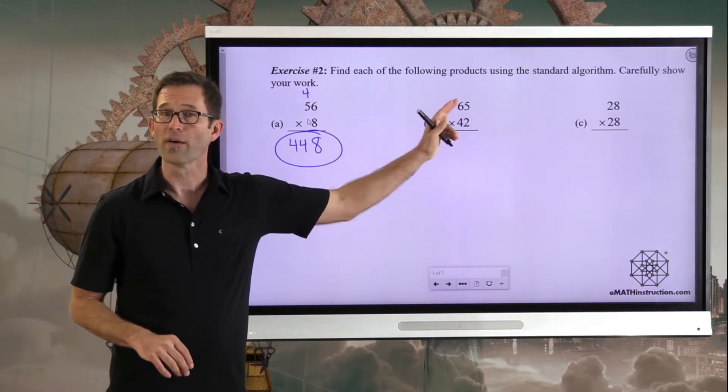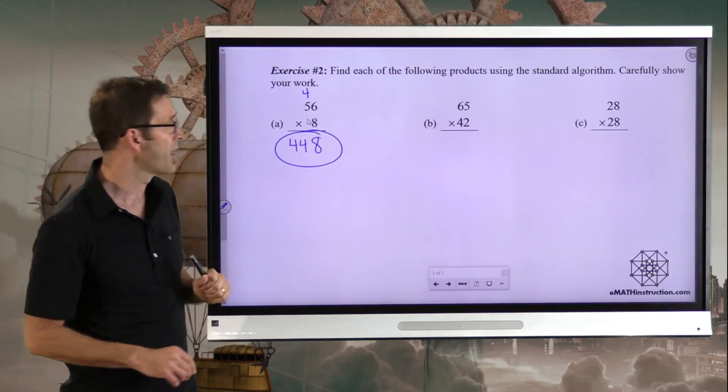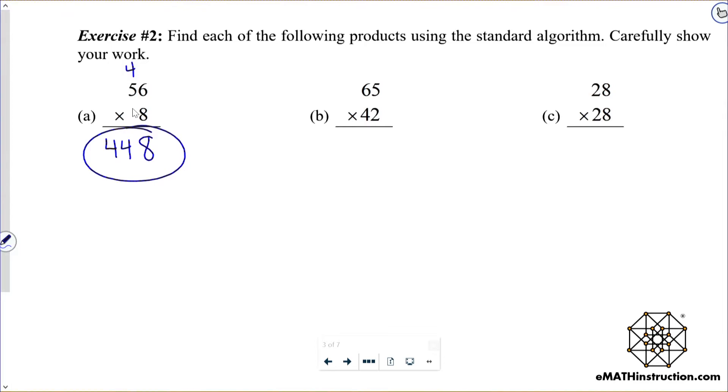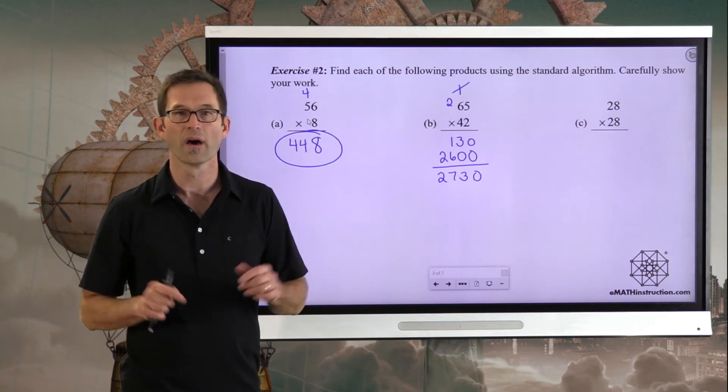In the second problem where we have 2-digit times 2-digit, that's where we're going to have to add more rows. First thing I'm going to do is multiply 65 by 2. 2 times 5 is 10, carry the 1. 2 times 6 is 12, then I add an extra 1 to get 13. I'm now going to add a 0 in. 4 times 5 is 20, I'll put that 0 down, carry the 2. 4 times 6 is 24, add another 2, and I get 26. Now I'm going to add those: 0, 3, 7, 2, and I find that 65 times 42 is 2,730.